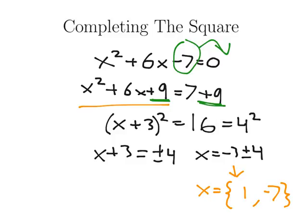we factored the left side because we turned it into a square. And we also simplified the right side, and we expressed it as a square, we took the square root.